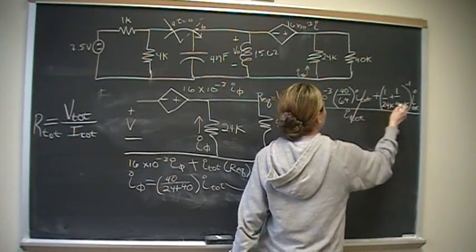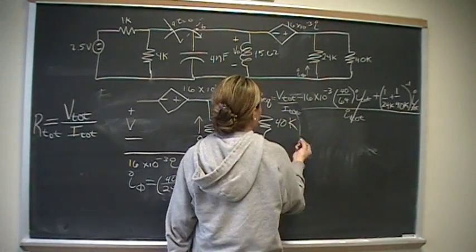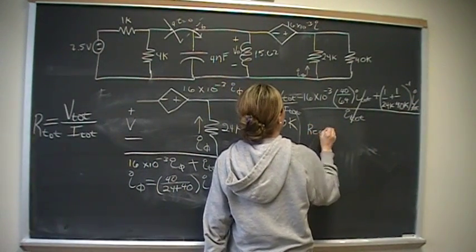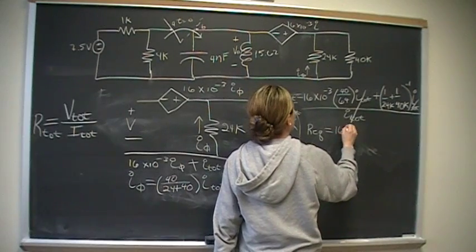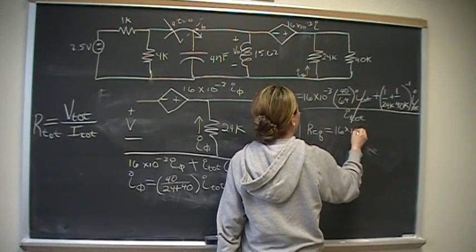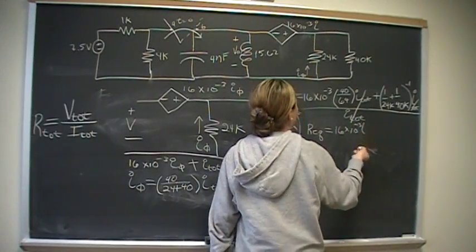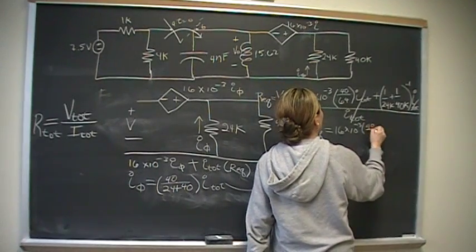And REQ is going to be V total divided by I sub total. Now, if we divide through everything by I sub total, we'll get our equivalent resistance.